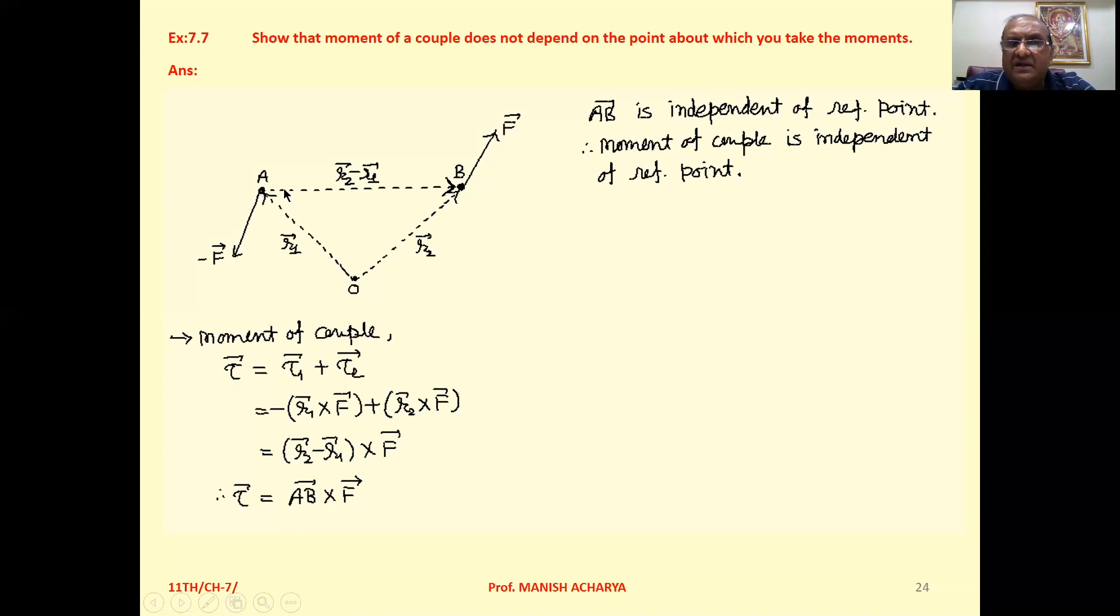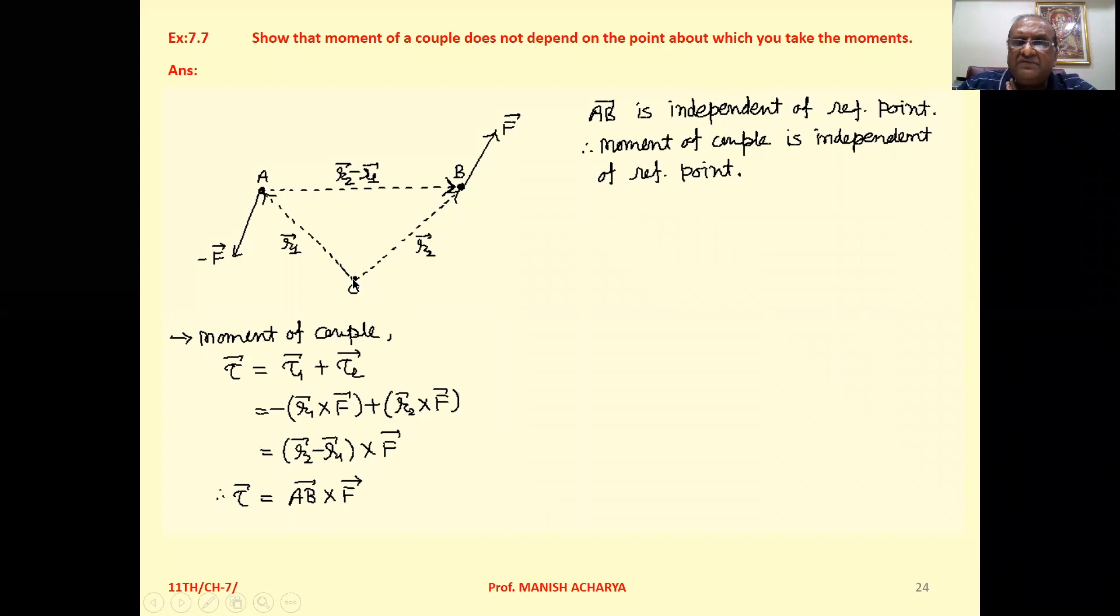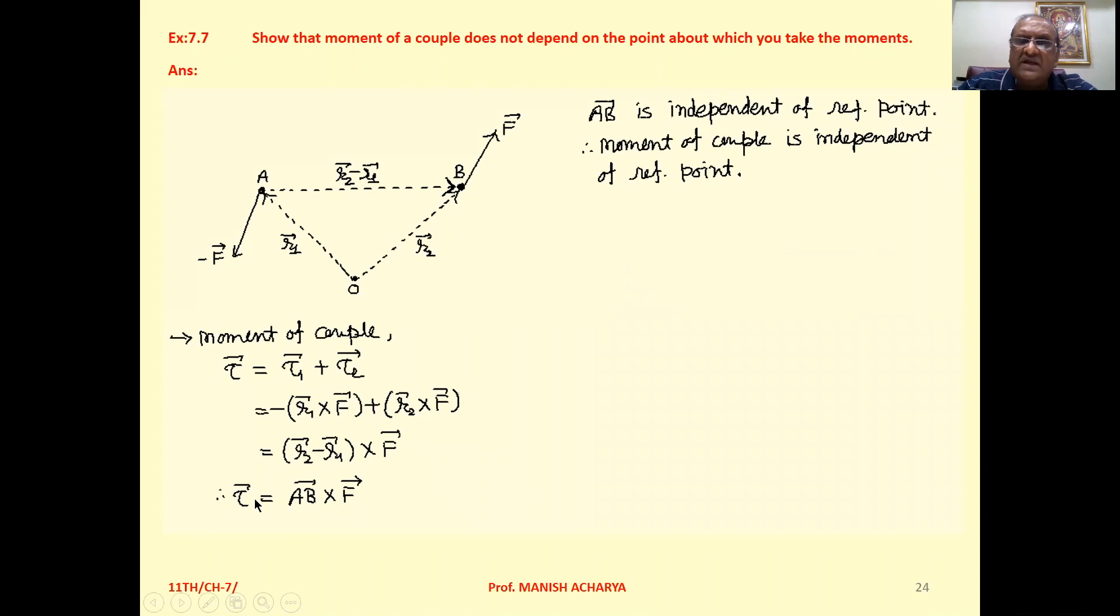Suppose you consider O on this side here also. Then also your vector AB will remain as it is AB. It implies that now when vector AB is independent of the reference point, then we can say the moment of couple, this torque, is independent of reference point. So it is proved.